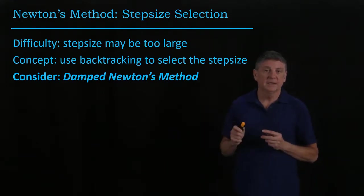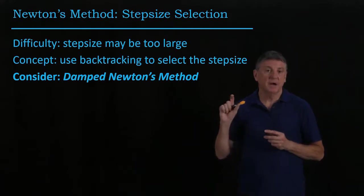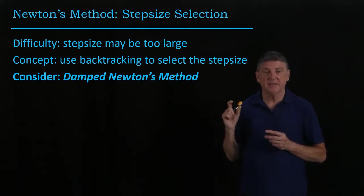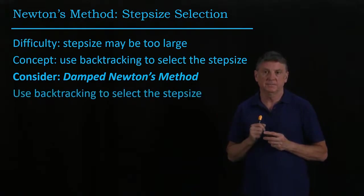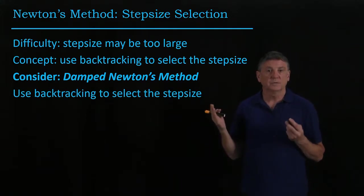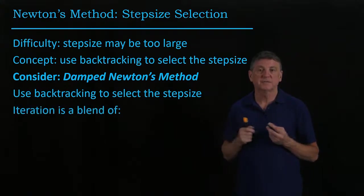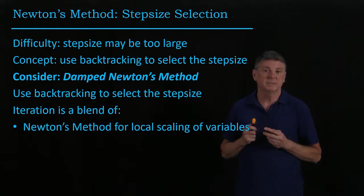So damping is where we put some extra calculation into a numerical method. Here, the way that we'll select the step size is using backtracking and specifically we'll use Armijo backtracking.